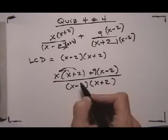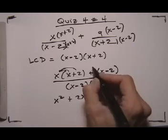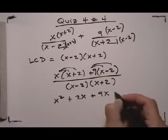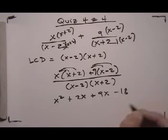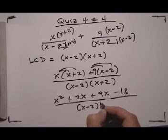So let's go ahead and distribute first. x squared plus 2x. Then distribute the second parentheses plus 9x minus 18, all over x minus 2, x plus 2.